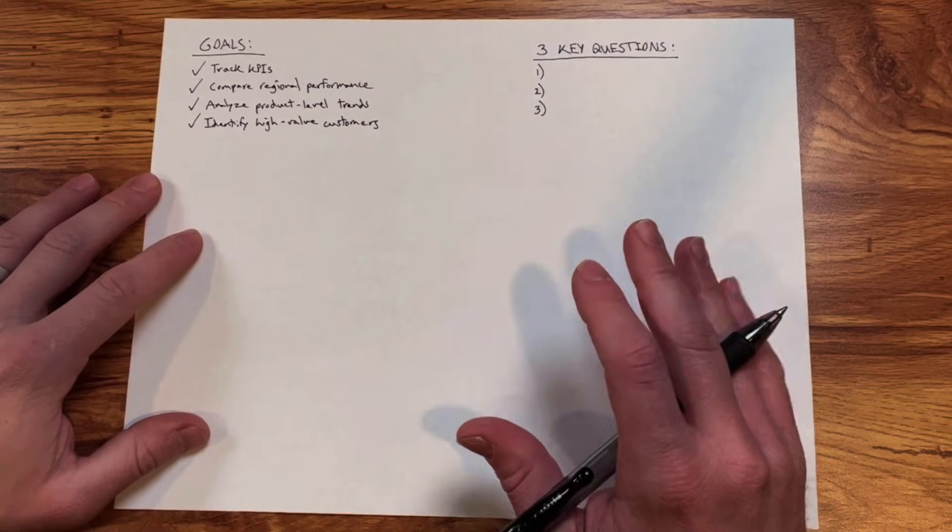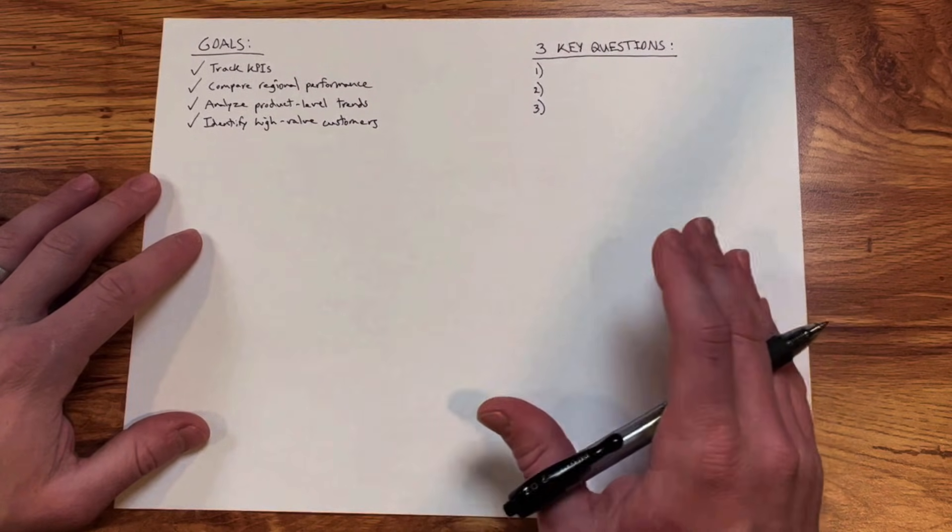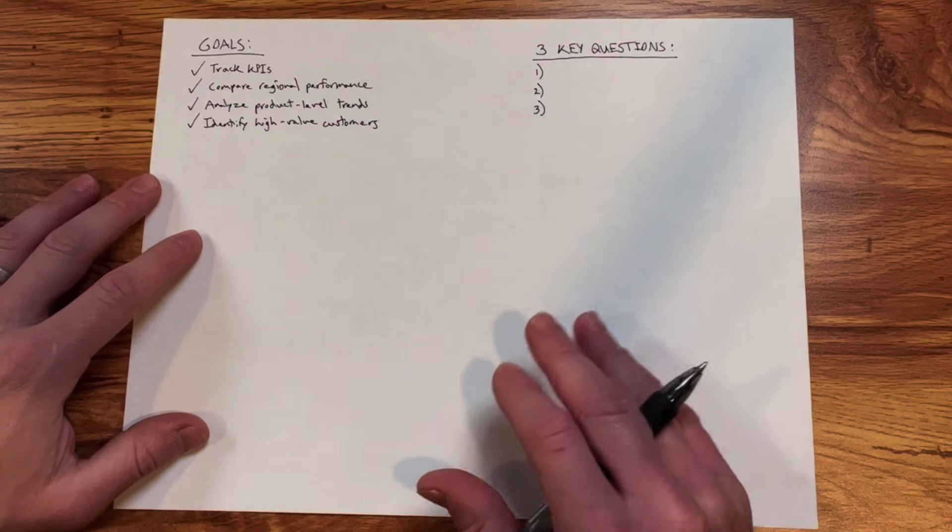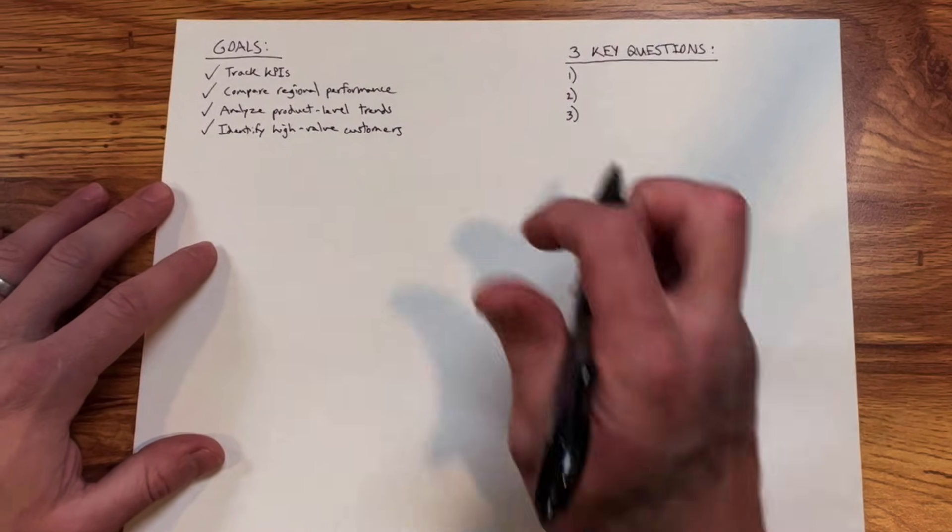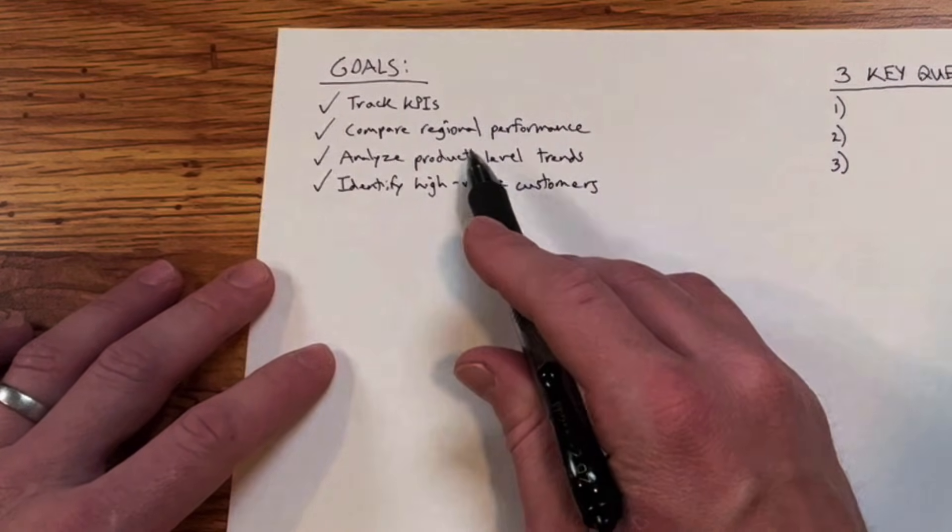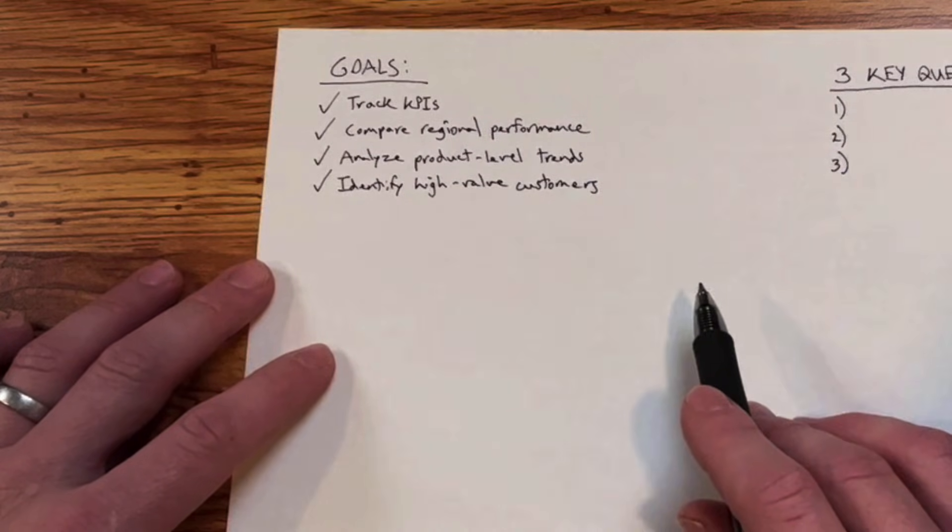Now that we have solid frameworks for choosing the right visuals and designing an effective dashboard, the last thing I'd recommend that you do before you start building is to brainstorm or sketch out potential layouts. Let's take a stab at actually sketching out a layout for our AdventureWorks dashboard. If we think back to our dashboard design framework, remember step one was to define the purpose and objective. Let's think back to our project brief at the beginning of the course. What I've done here is reiterate the goals that we need to achieve: track KPIs, compare regional performance, analyze product level trends, and identify high value customers.